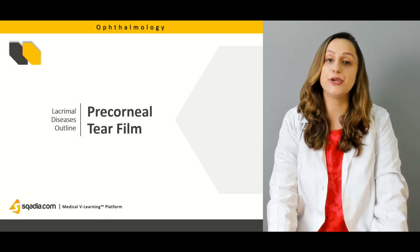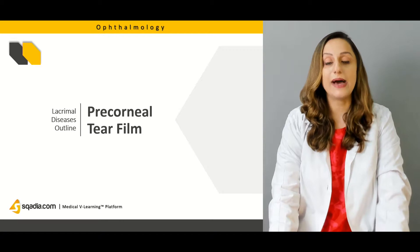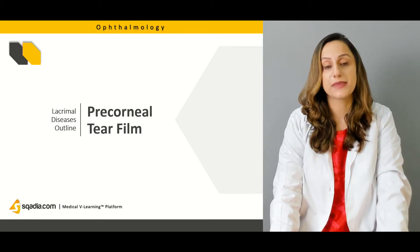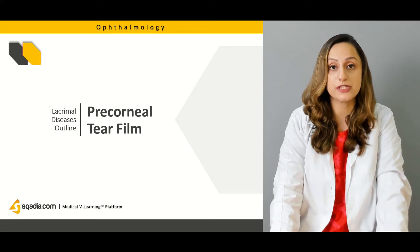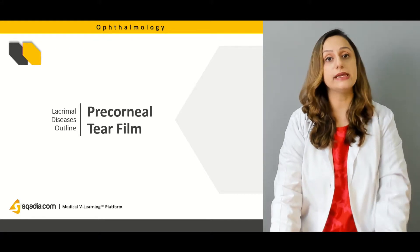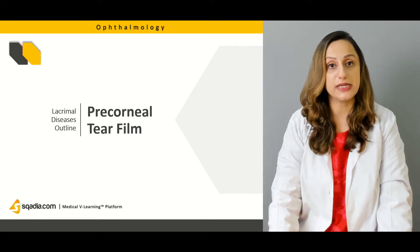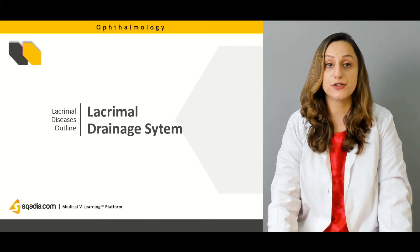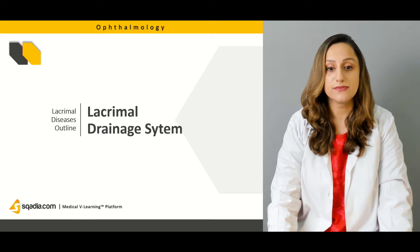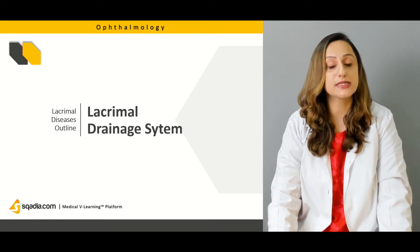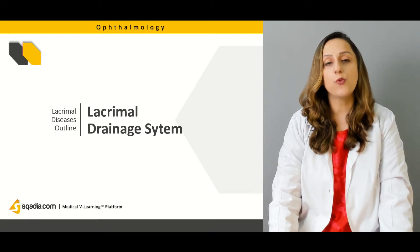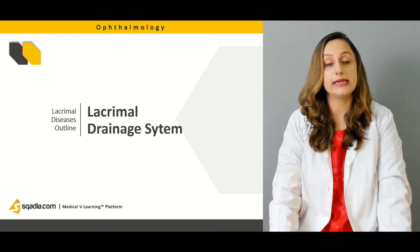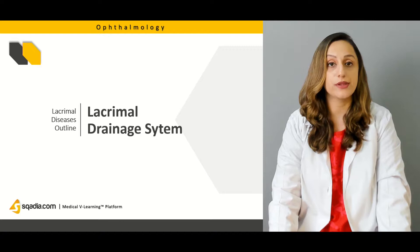Foremostly, we'll be discussing the precorneal tear film. Having the background knowledge is the mainstay towards the applied clinical anatomy and how we correlate this anatomy towards different pathological features of tear film production. We'll also be dealing with the lacrimal drainage system and what can go wrong with it, including the canaliculi, the sac, or the duct openings.